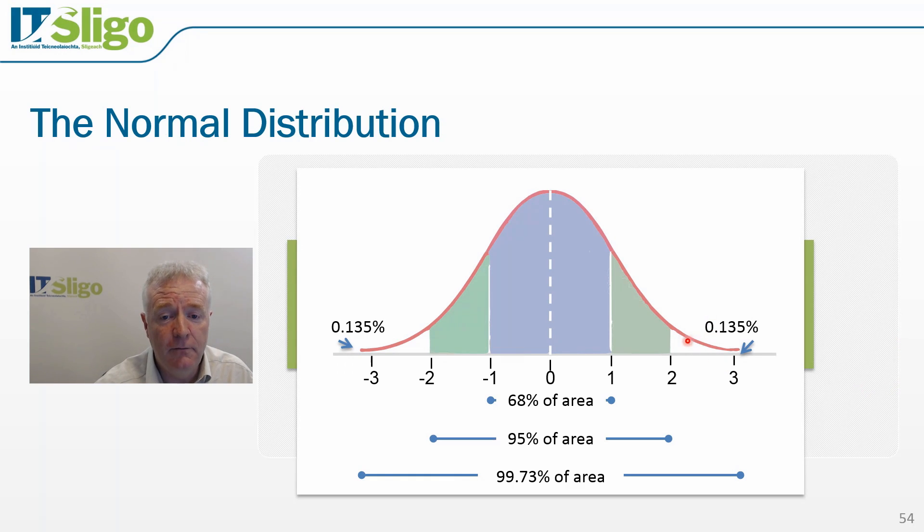Similarly, we would expect very few points to fall between two and three standard deviations, or beyond two standard deviations of the centreline. In actual fact, in total, only 5% of all measurements should fall beyond two standard deviations of the centreline.